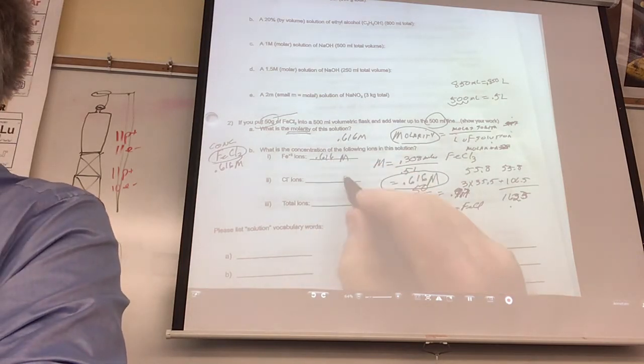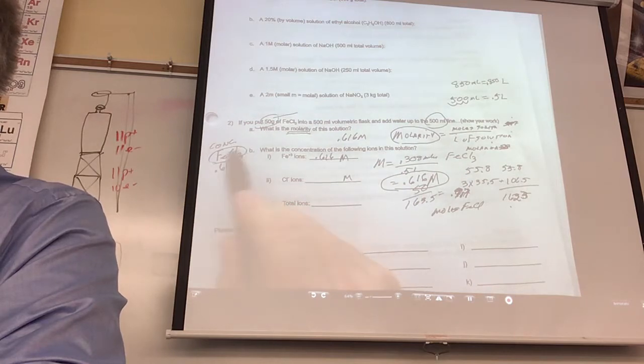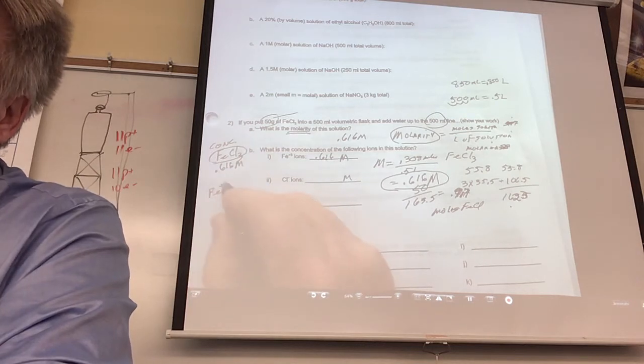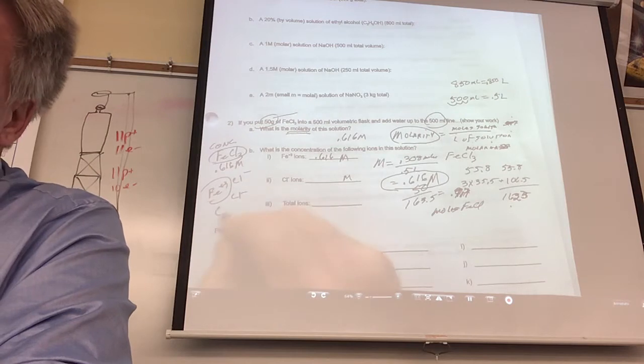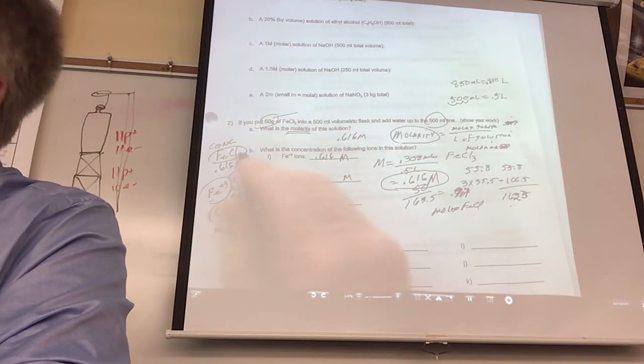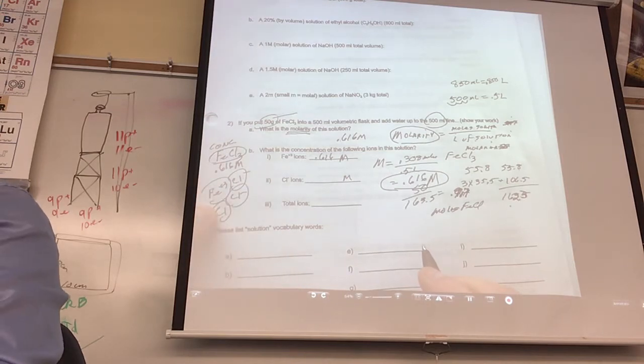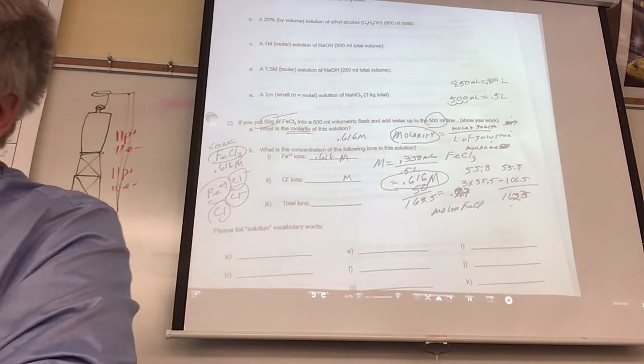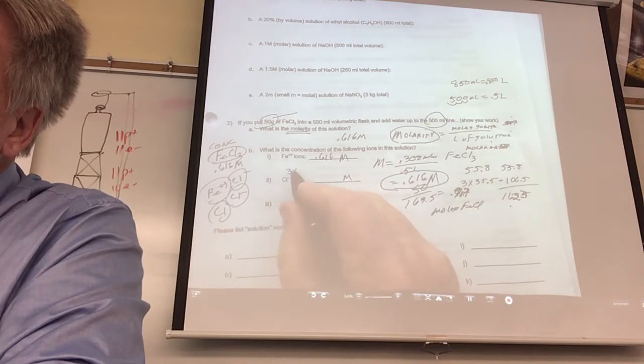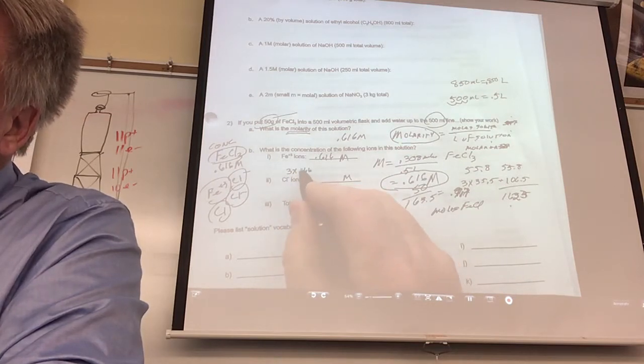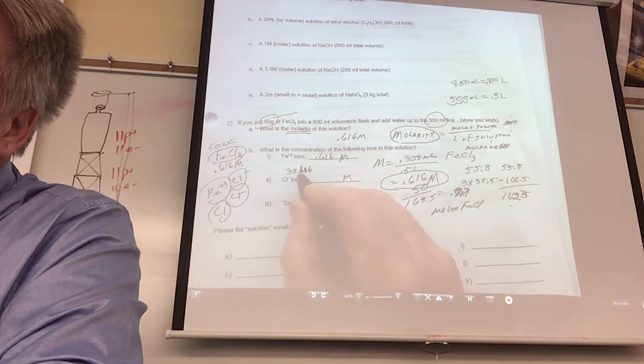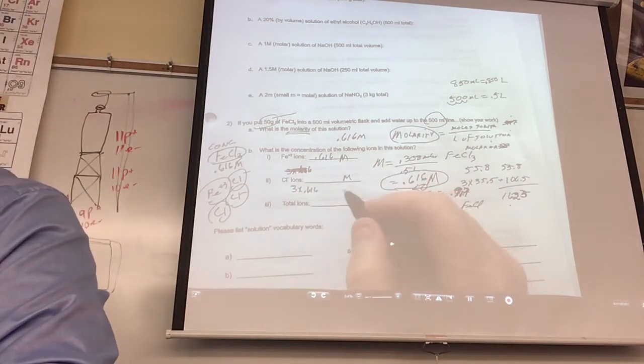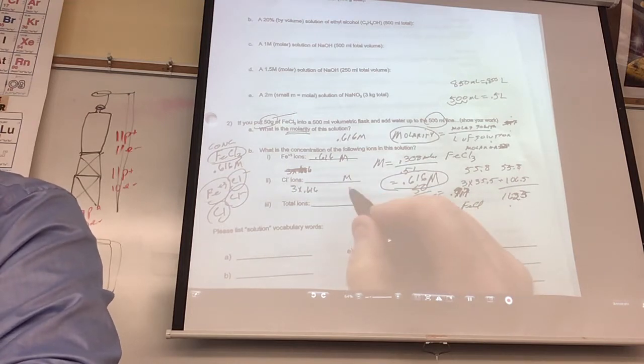Okay, now, here's my question. Here's the highest stuff I'll do all the whole chapter, I think. What's the concentration of FeCl3? 0.616 molar. What is the concentration of iron ions? Watch, now a little magic. For every one of these, how many of these do you get? One. That's the same molarity. That was easy.